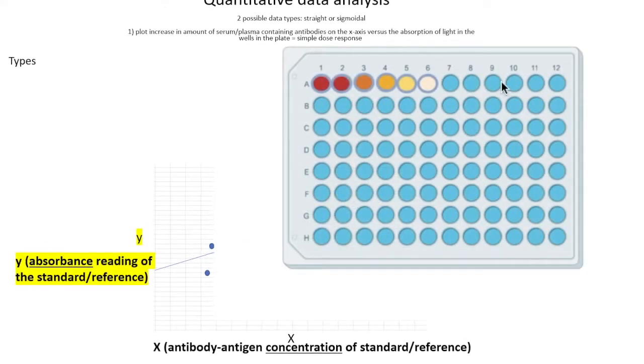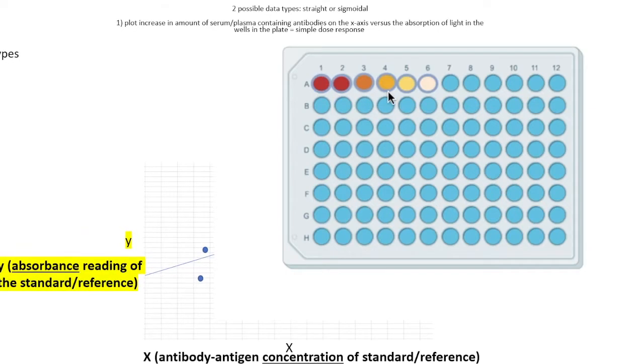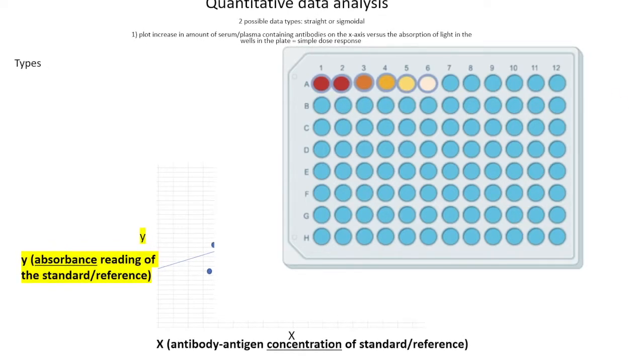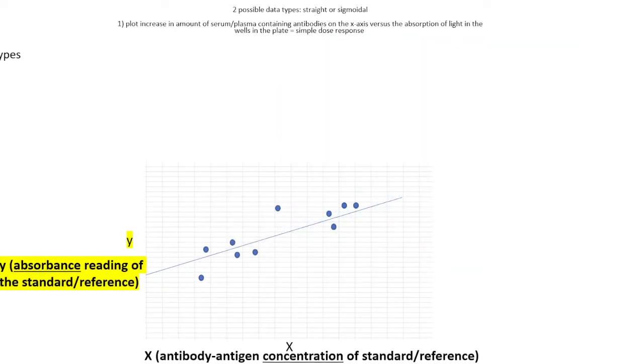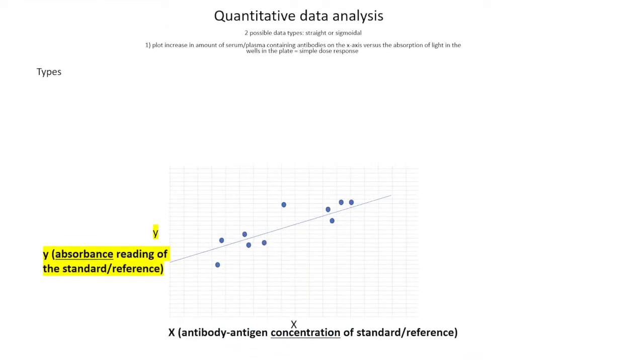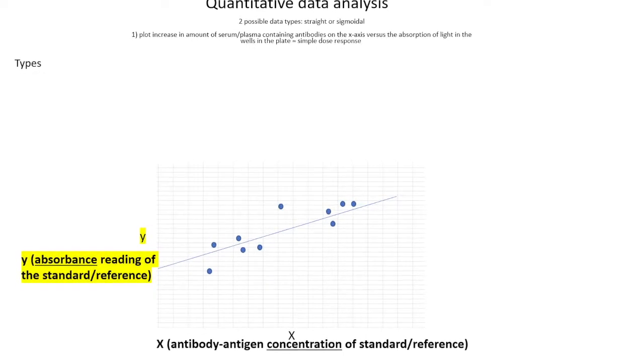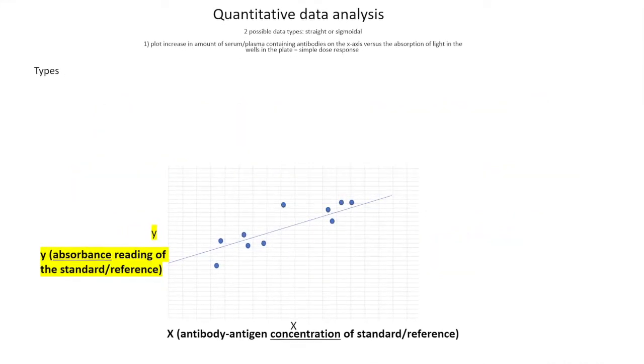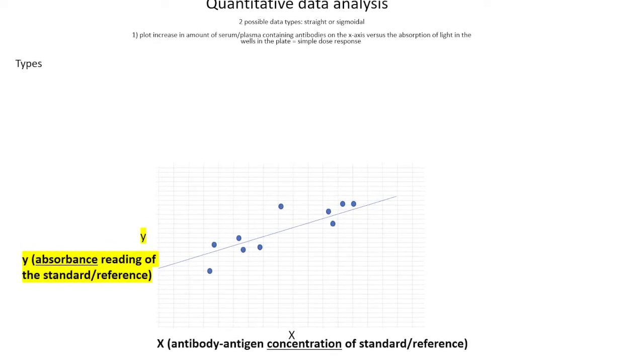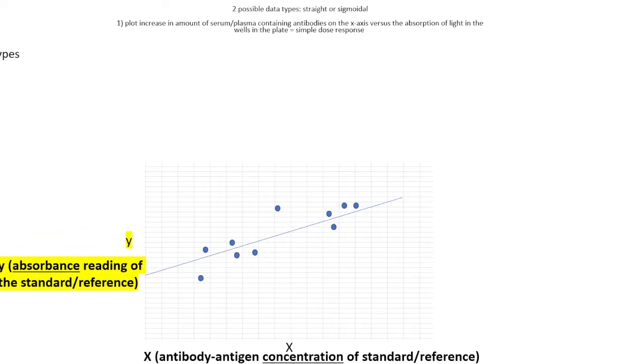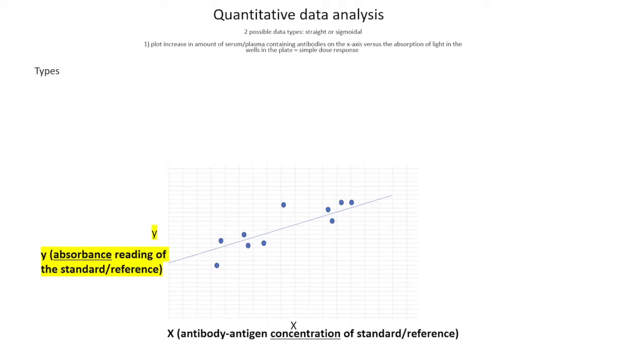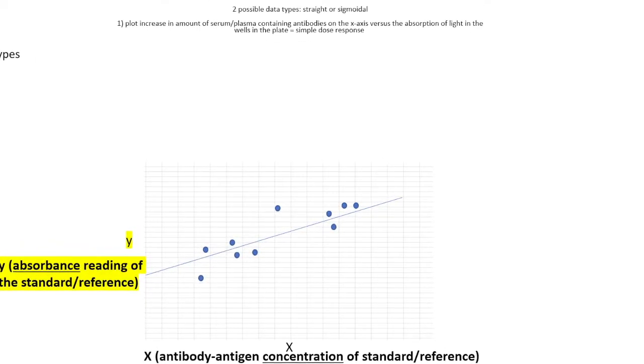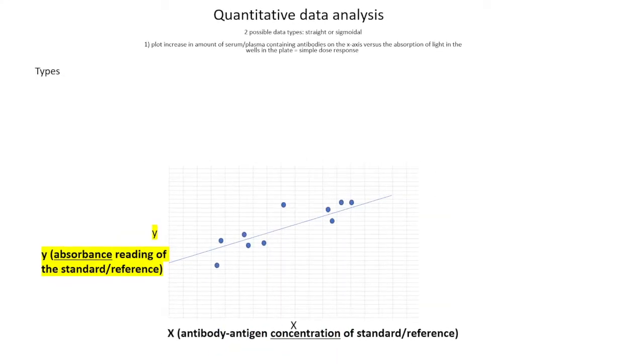In this scenario, you would need a standard curve. You would take a known amount of the antibody or antigen that you're trying to detect and do serial dilutions. The serial dilution allows you to incrementally decide how much protein is in each well. That's going to act as a standard curve, a reference point for all the samples which you are going to analyze from sources that you don't know how much there is. You read off the standard curve and compare it with your reading from the unknown patients or samples to estimate how much protein, antibody, or antigen you have in the unknown samples or specimens.